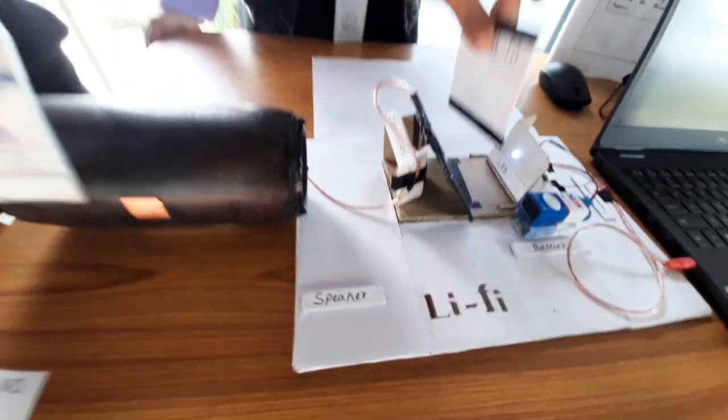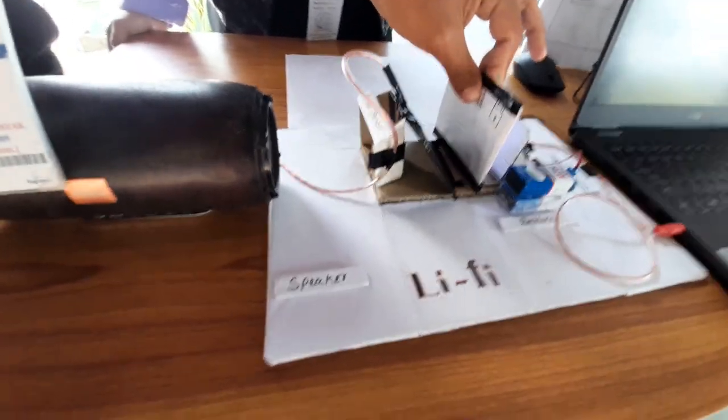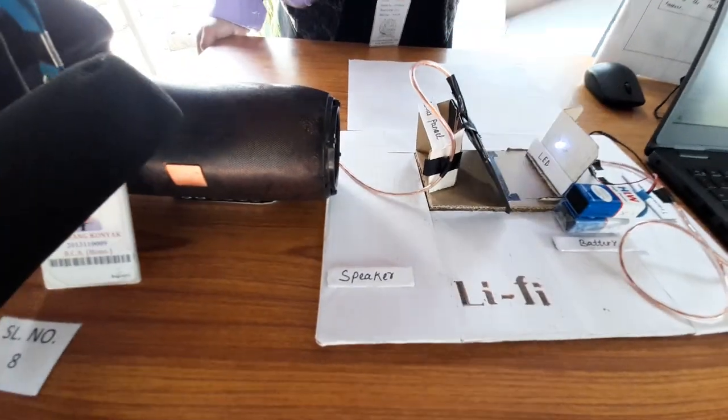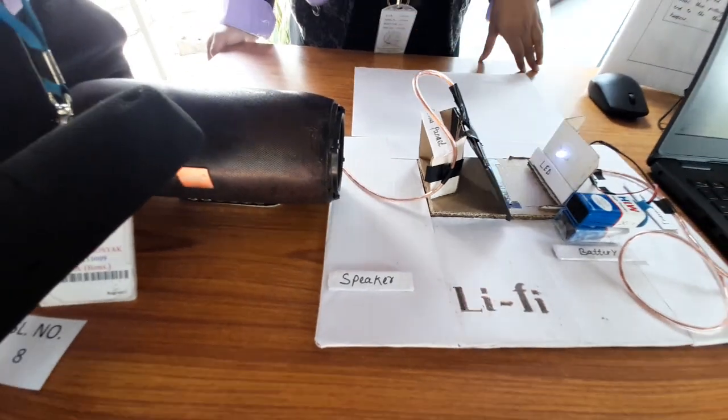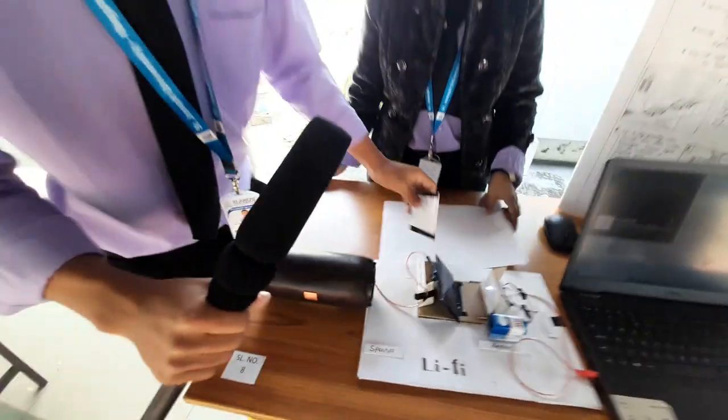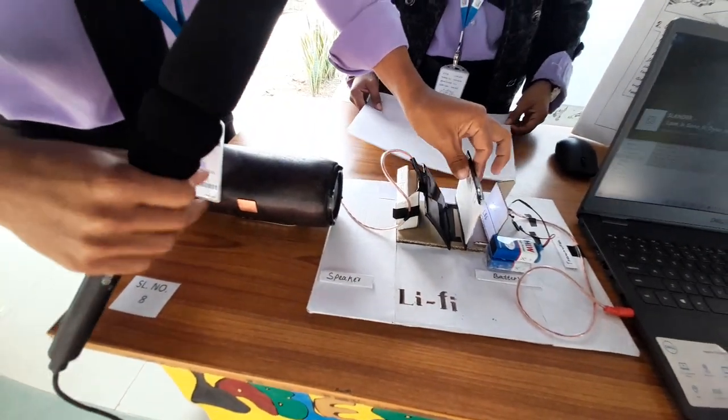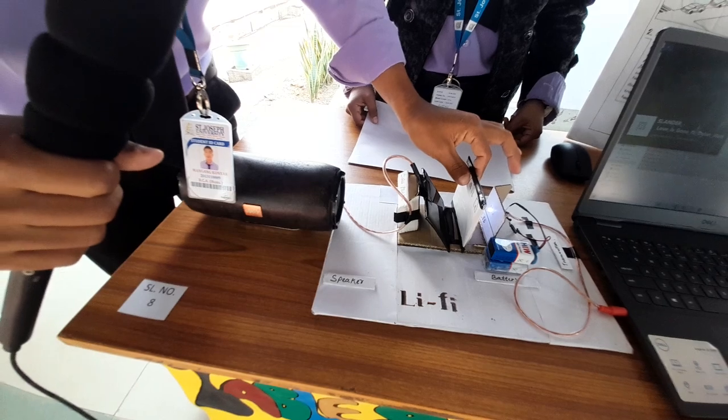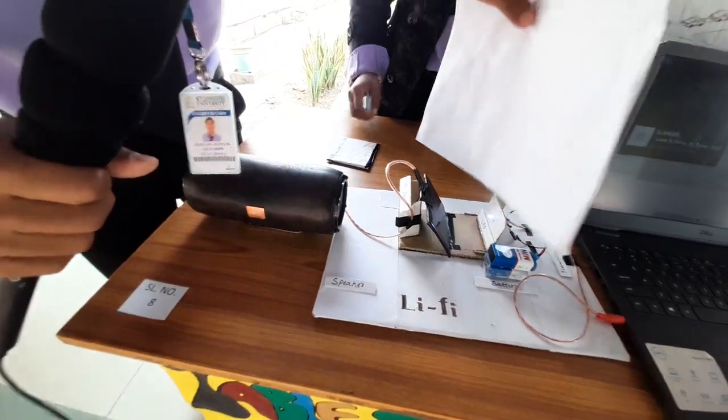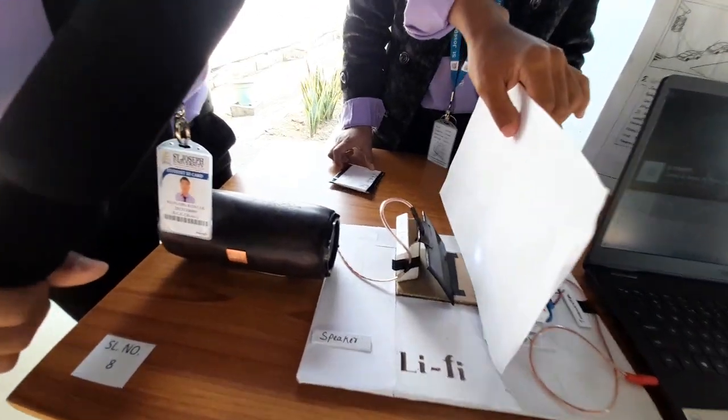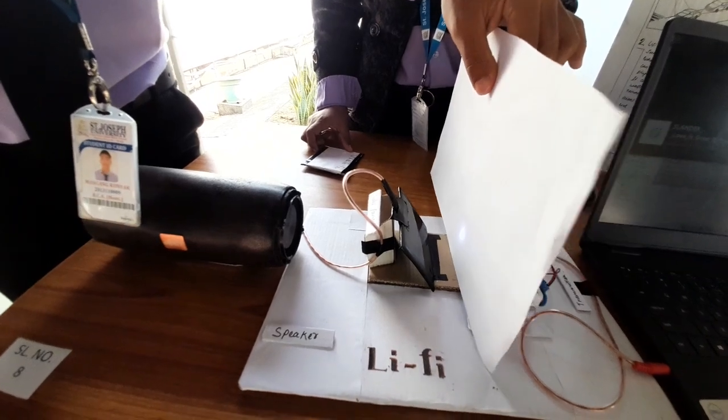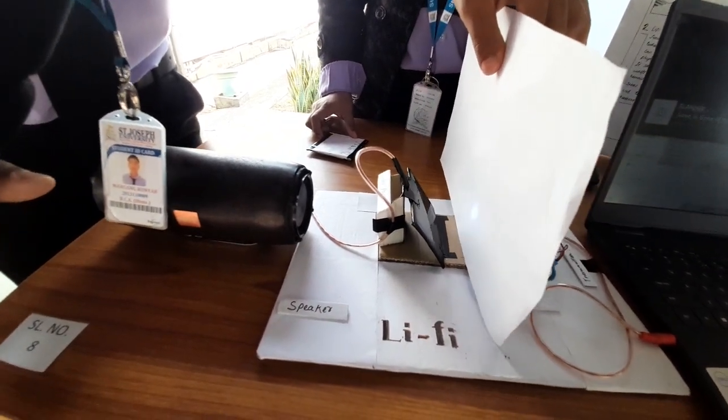We can stop this signal, this light. We can stop this light and the flow of this audio data will stop, so this speaker will stop playing. But transparent materials like this paper can still pass through because a little amount of light is still passing through the paper.